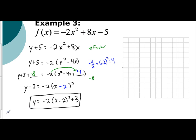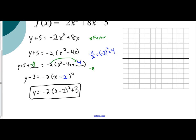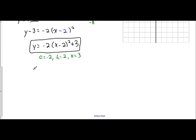So let's identify a, h, and k from this information. A is negative 2, h is positive 2, and k is 3. That allows us to find and state our vertex and axis of symmetry. Our vertex is the coordinate (h, k), so our vertex is (2, 3). Our axis of symmetry is x equals h, so x equals 2.